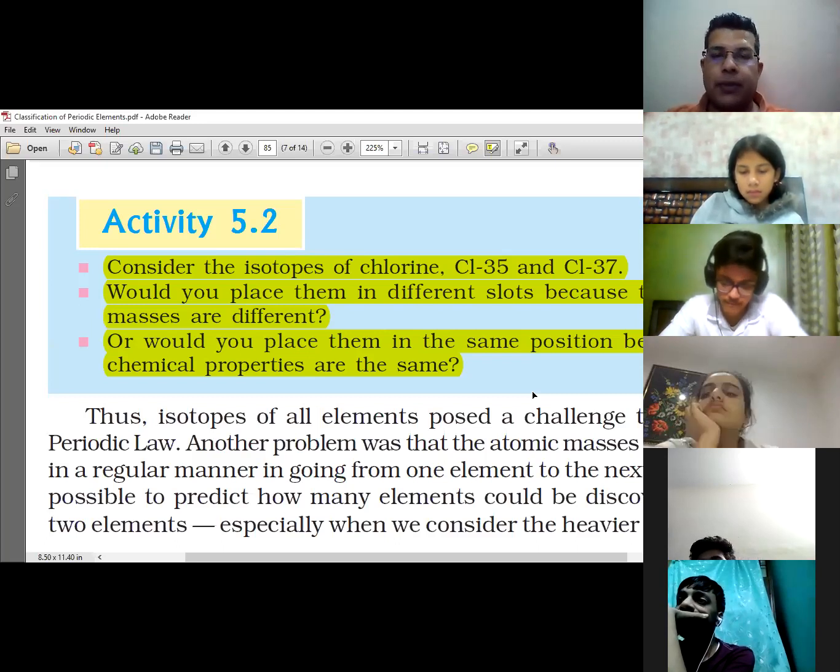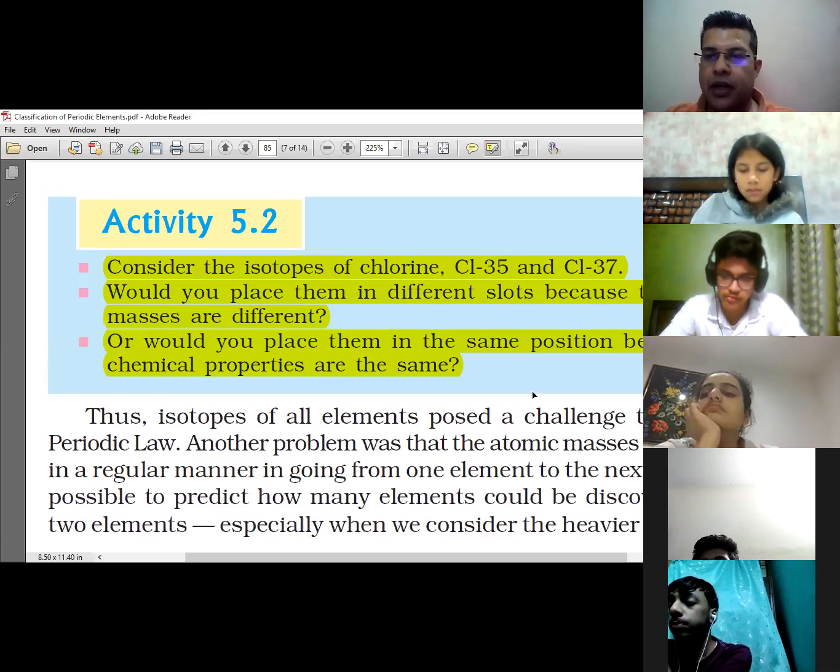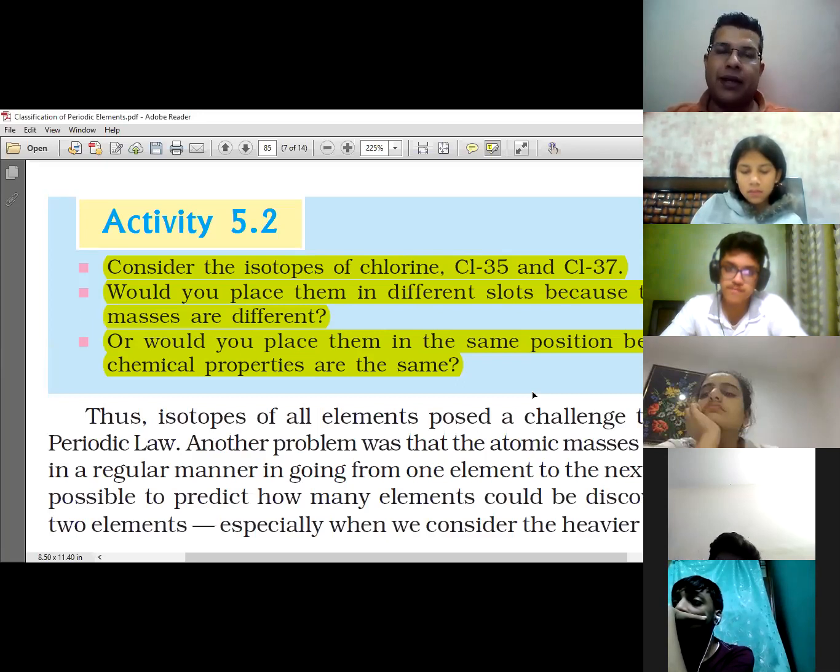Isotopes posed a challenge to Mendeleev's periodicity because chemical properties are similar though physical properties change a little. If we're talking about atomic mass, they couldn't understand whether to place them in different slots or the same slot.